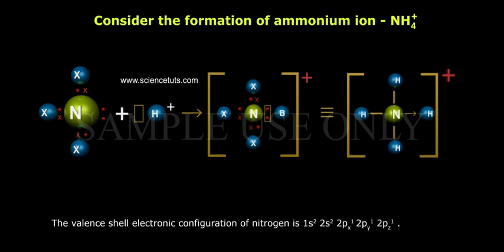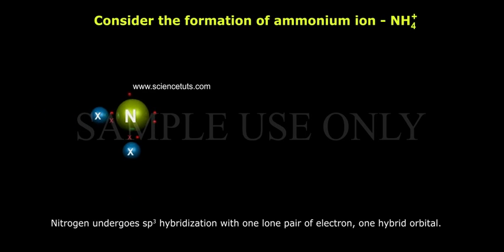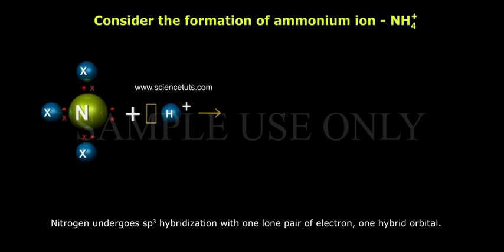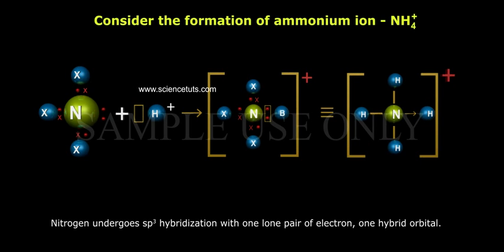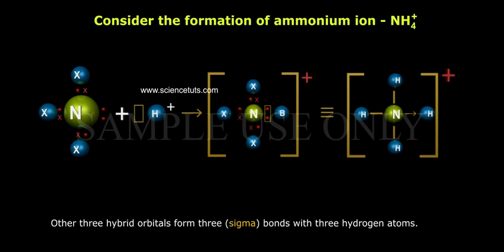Nitrogen undergoes sp3 hybridization with one lone pair of electrons in one hybrid orbital. Other three hybrid orbitals form three sigma bonds with three hydrogen atoms. In hydrogen ion, one s vacant orbital is present.